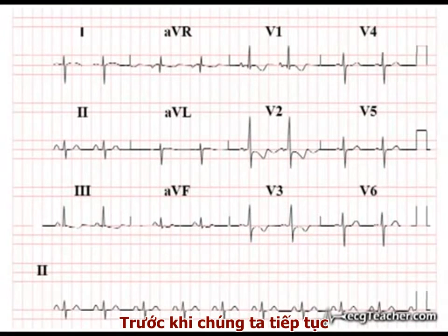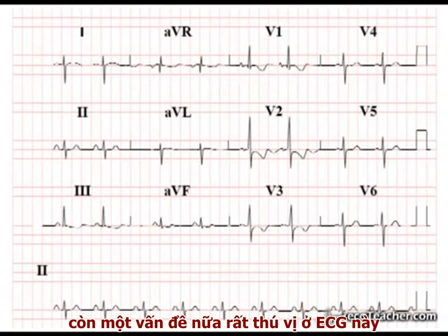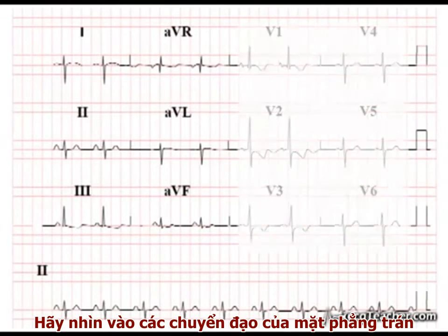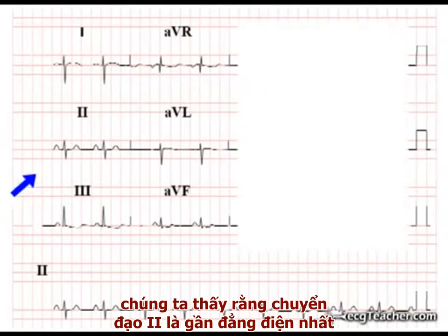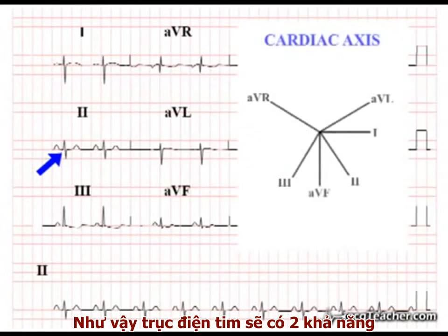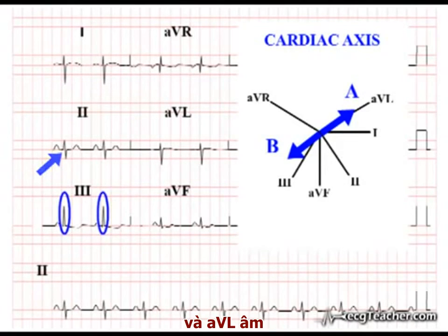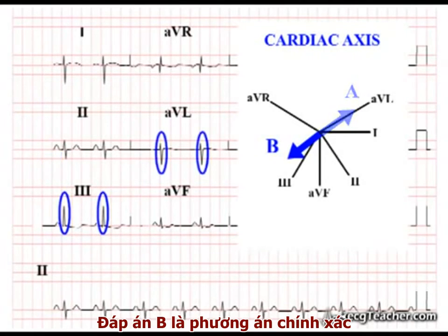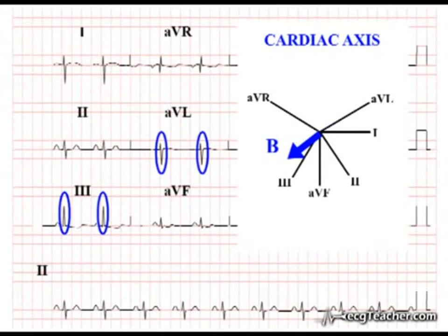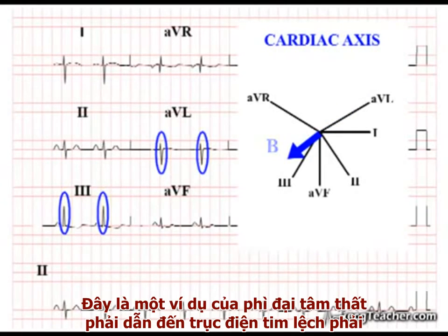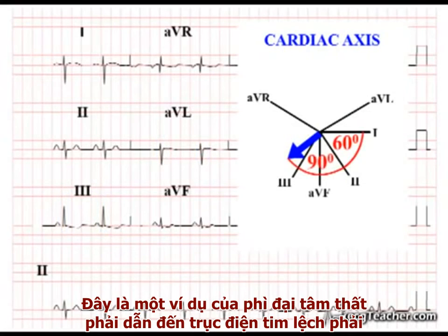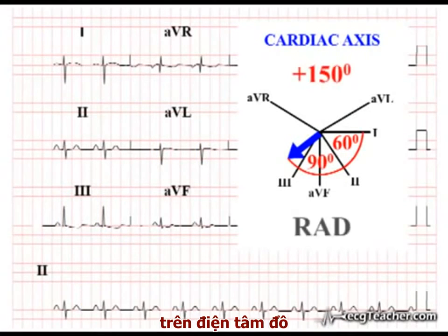Before we move on, there is at least one further feature of interest on this ECG. Looking at the frontal leads, we note that lead 2 is isoelectric, giving two possible cardiac axes at right angles to this lead. As lead 3 is strongly positive and AVL negative, option B must be correct. This is an example of RVH resulting in right axis deviation on the ECG.